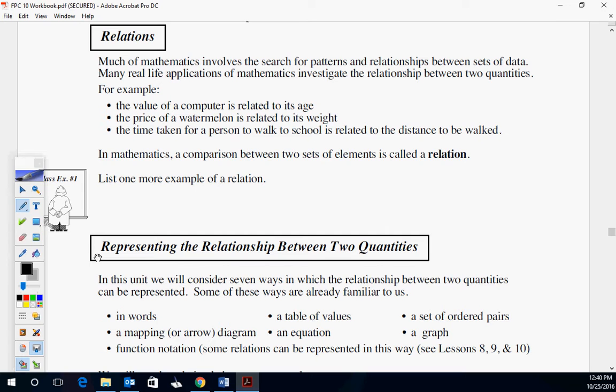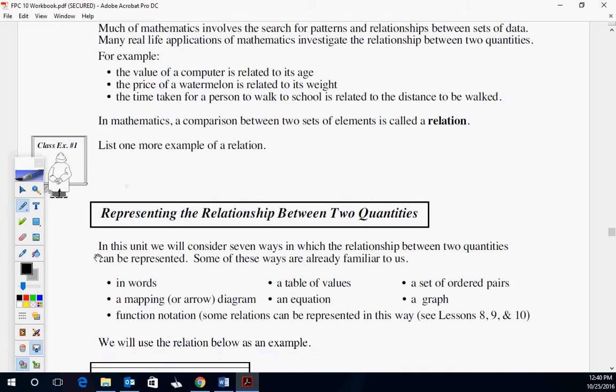For example, the value of a computer is related to its age. The value of a computer and its age, obviously that's a regression. It's going to drop in price as it gets older, just like a car. The price of a watermelon related to its weight, the heavier the more expensive. That's a positive relation. And the time taken for a person to walk to school is related to the distance to be walked. In mathematics, we call these relations.